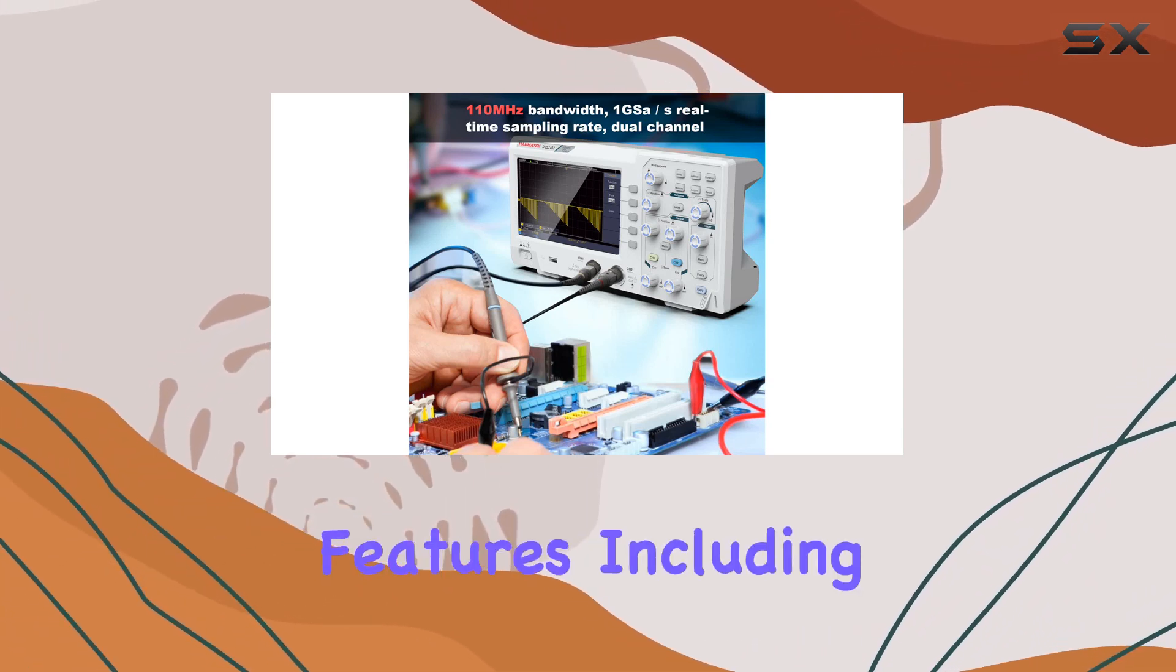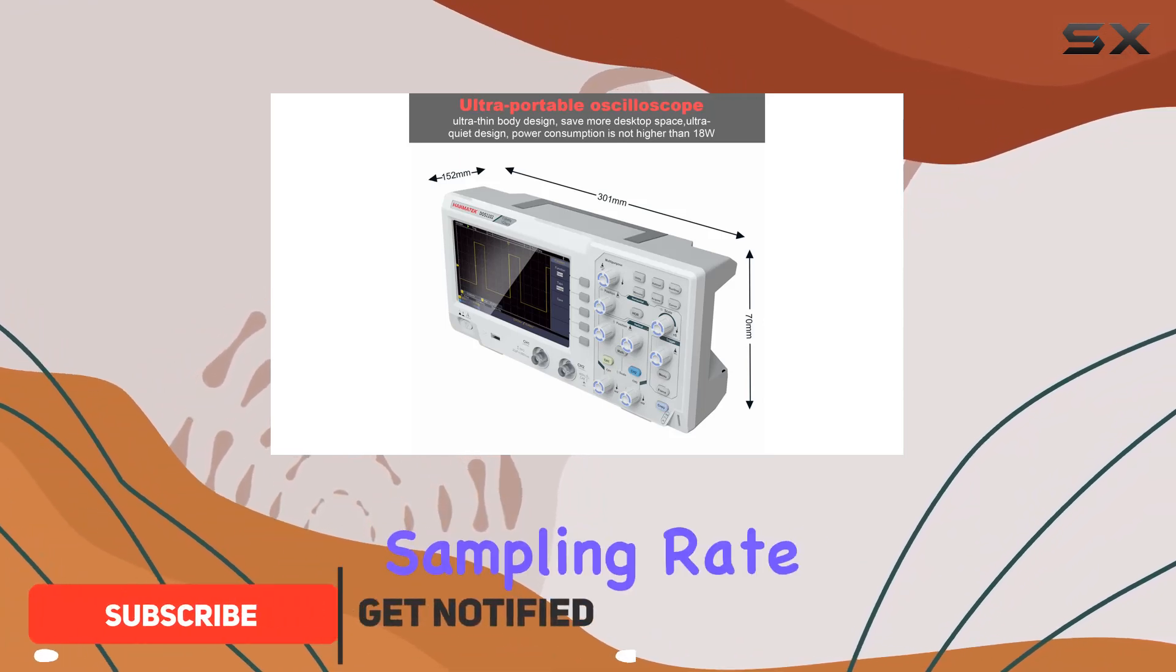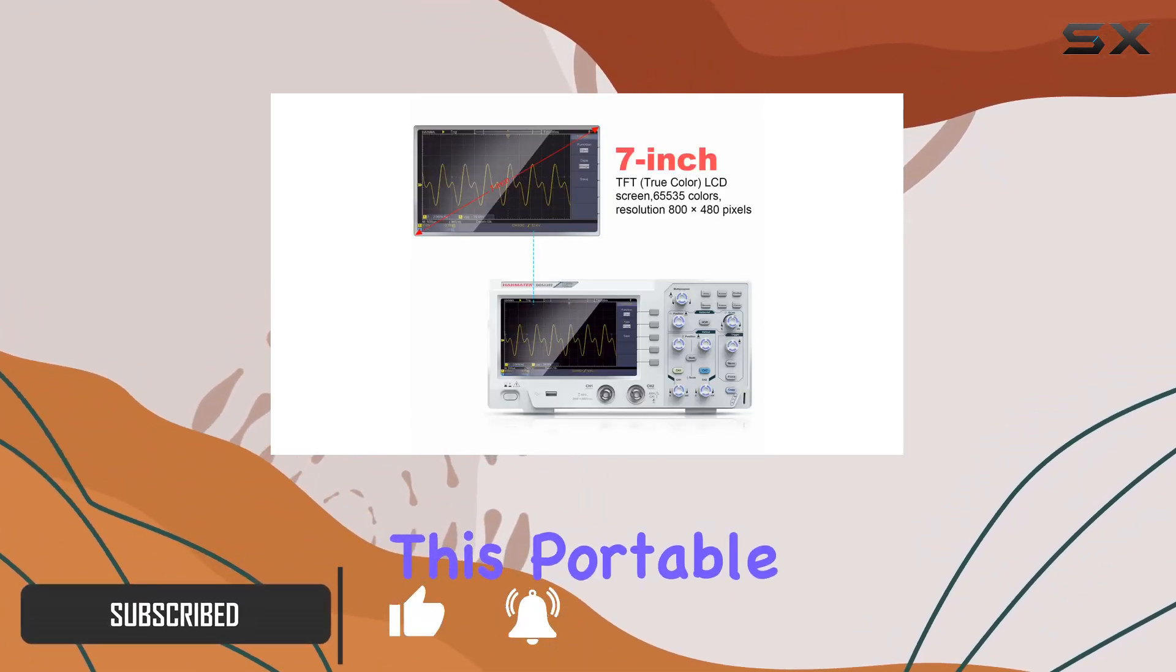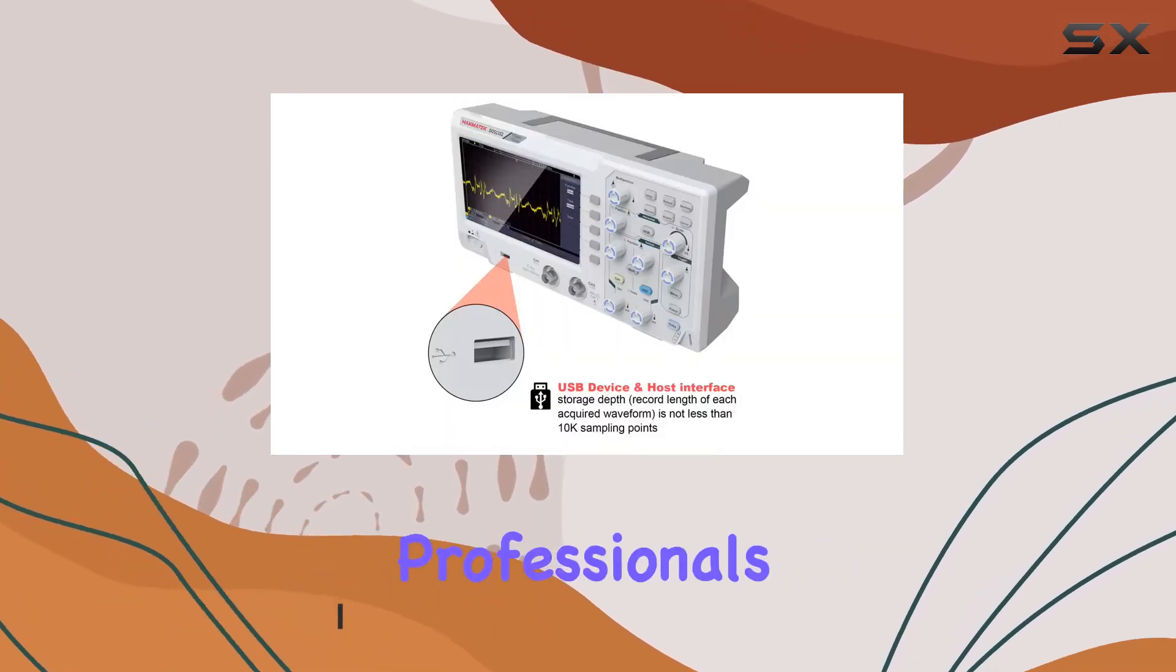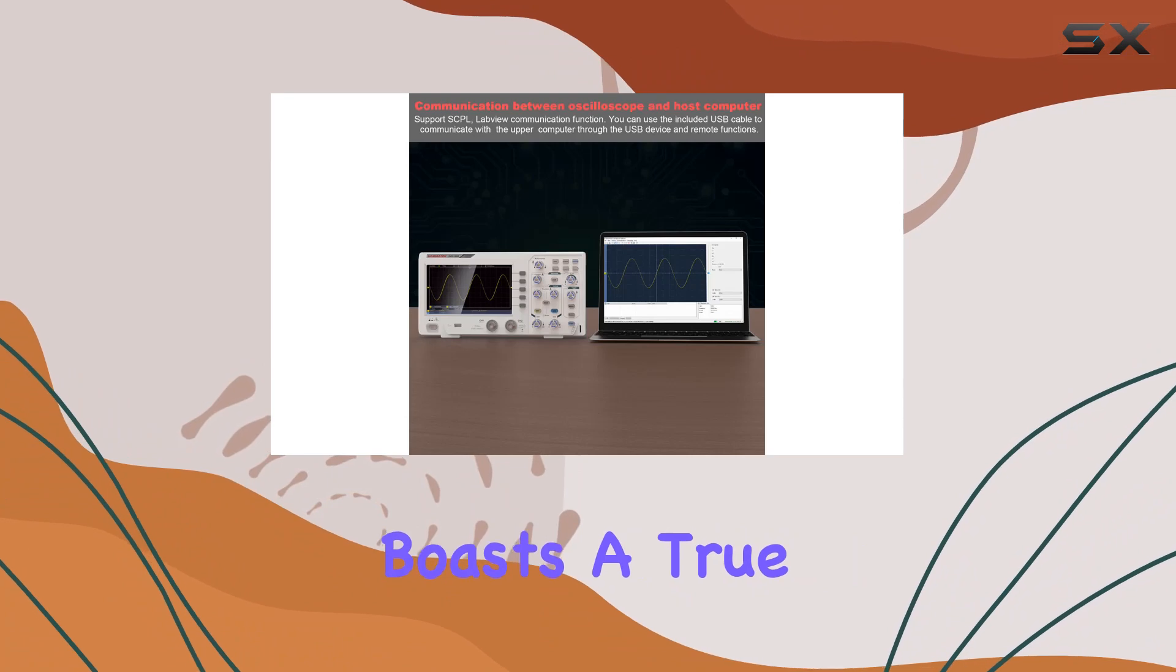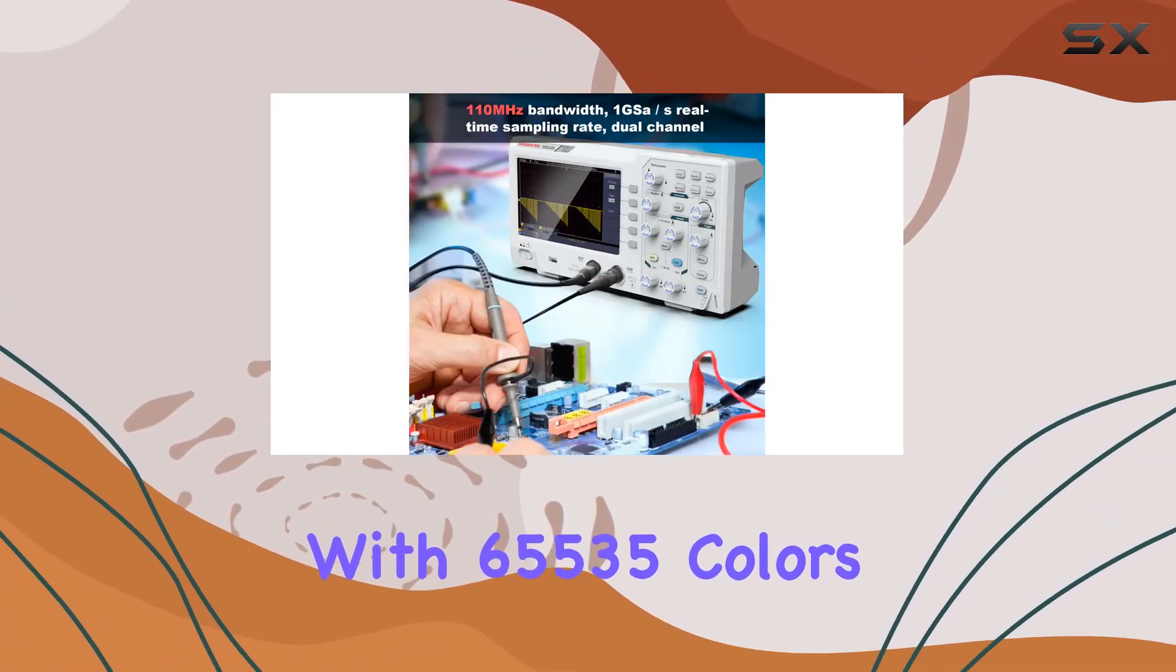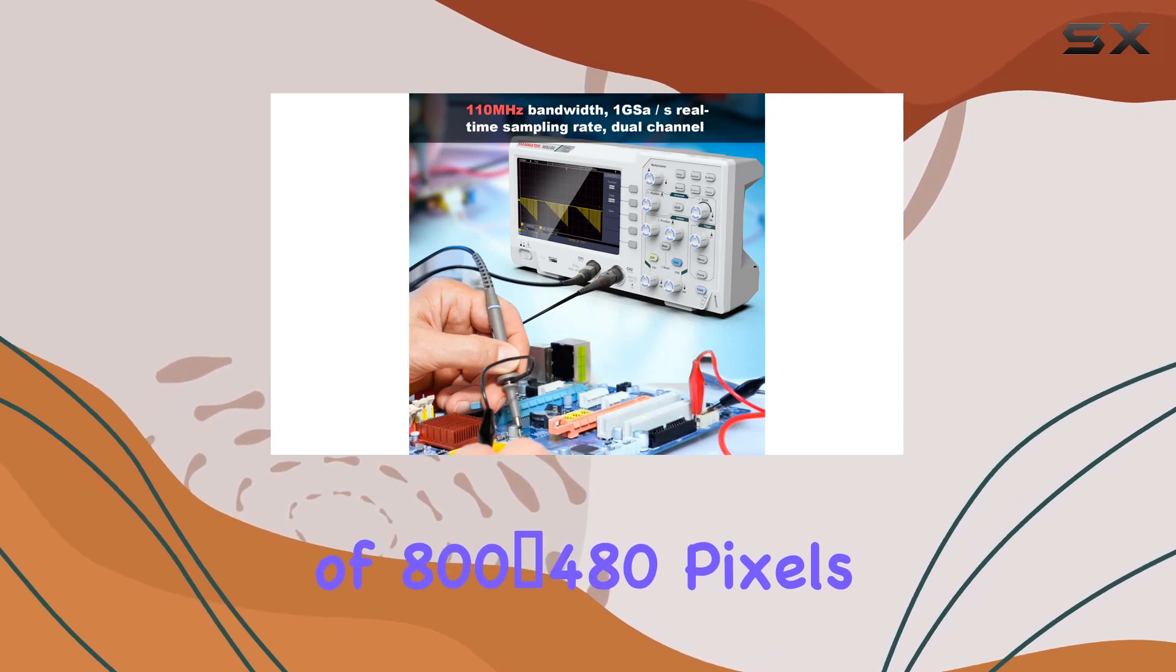With its impressive features, including a 110MHz bandwidth and a real-time sampling rate of 500 MSS per channel, this portable oscilloscope is geared towards professionals and enthusiasts alike. The 7-inch TFT LCD screen boasts a true-color display with 65,535 colors and a resolution of 800x480 pixels.